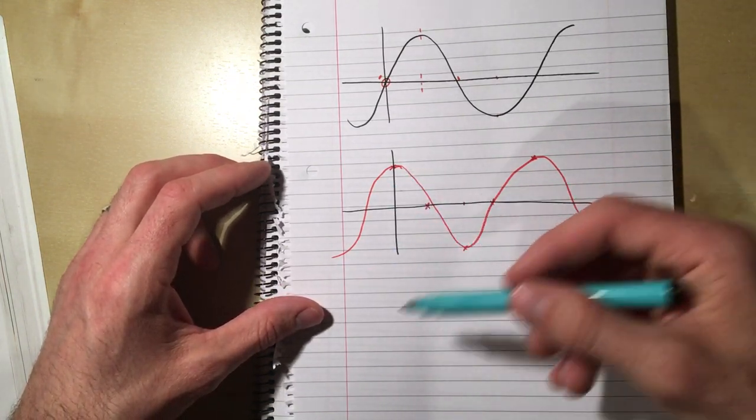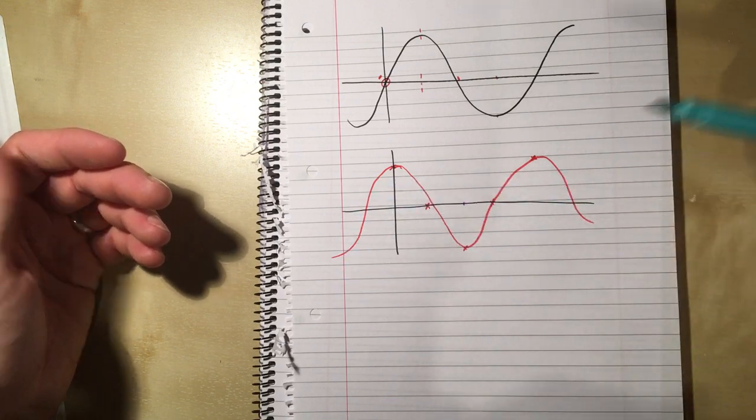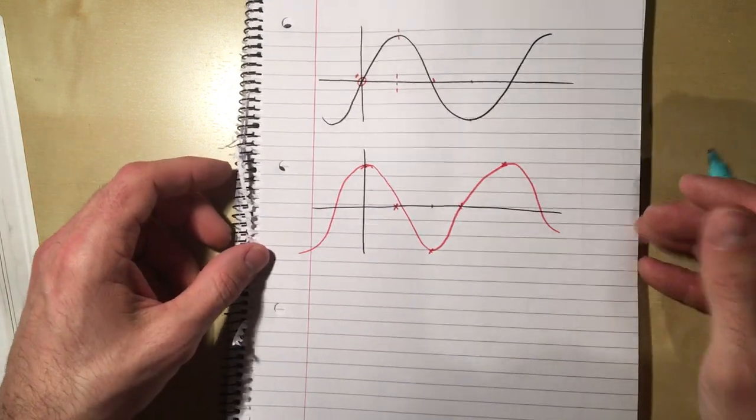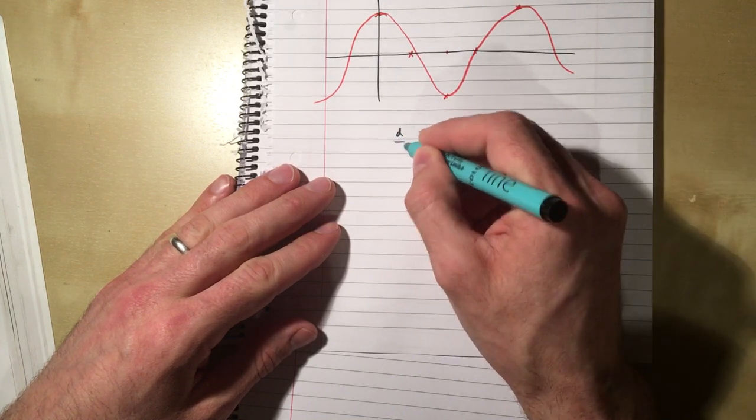And if you differentiate cos, we're going to find out the derivative of cos is minus sine. Well, let's start with the cos curve, do the same arguments with the gradients, and you'll find that you end up with a curve, the shape of a sine graph.